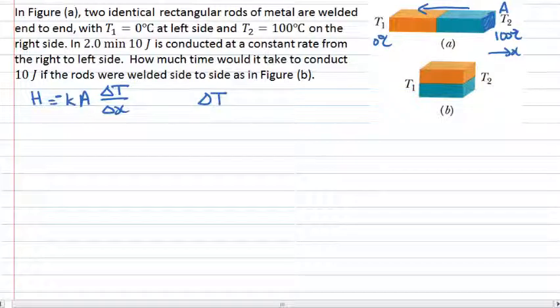We can say that the temperature difference across the rods is given by the heat flow multiplied by a material specific quantity which is the thermal resistance.